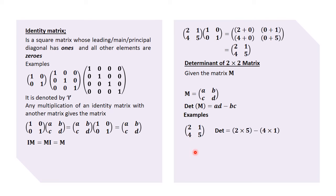For example, with the matrix [2, 1; 4, 5], the determinant is simply 2 times 5 minus 4 times 1, which gives us 6. That's pretty simple — the determinant is the product of the leading diagonal elements minus the product of the other elements in a two by two matrix.